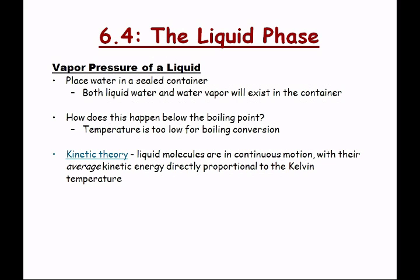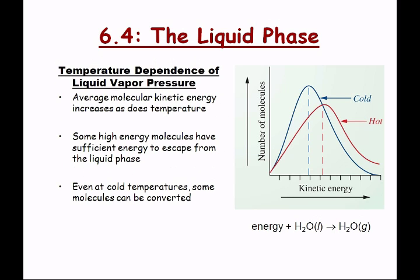Place water in a sealed container — both liquid water and water vapor will exist in the container. How does this happen below the boiling point? The temperature is too low for full boiling conversion; it's just that some molecules have enough energy to get over that phase transition. The liquid molecules are in continuous motion with their average kinetic energy directly proportional to the Kelvin temperature. Since the average kinetic energy is lower than what it would be at 100°C, the bulk of them will stay in the liquid phase, but some — very few — will have enough energy to escape into the vapor phase, causing vapor pressure.